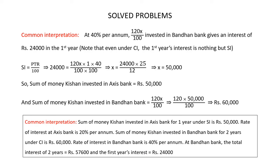Now we have found out that the rate of interest at Bandhan Bank is 40%. So at 40% per annum, the amount 120x/100 invested in Bandhan Bank gives an interest of Rs 24,000 in the first year. Note that even under compound interest, the first year's interest is nothing but simple interest. We know that simple interest is equal to principal multiplied by time multiplied by rate of interest divided by 100. On substituting the values in this formula, we have 24,000 is equal to 120x multiplied by 1 multiplied by 40 divided by 100 multiplied by 100.